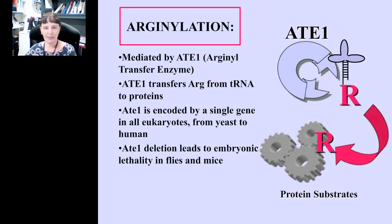Arginylation is mediated by an enzyme called ATE1, which stands for arginyl transfer RNA-protein transferase. ATE1 transfers arginine from tRNA to proteins. In all eukaryotes, ATE1 is encoded by a single gene, with the exception of some plants where the ATE1 gene is duplicated. ATE1 deletion leads to embryonic lethality in higher vertebrates — if you delete ATE1 in Drosophila or in mice, it is embryonic lethal. This was pretty much the state of the field before the research I work on regarding arginylation.